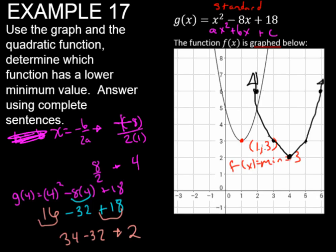And we see that g of x has a lower minimum value. This one is a value at 4 and 2.